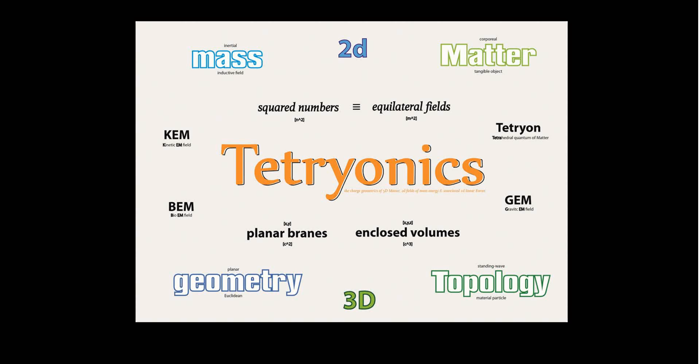Tetrionic theory is a precise theory of physics based on equilateral geometries. In developing the theory, it became imperative that I define and differentiate various aspects of general terminology and show their relationships geometrically.